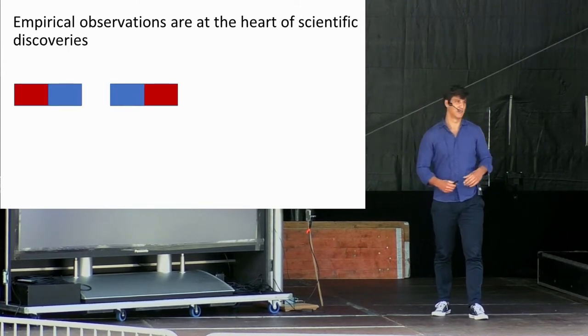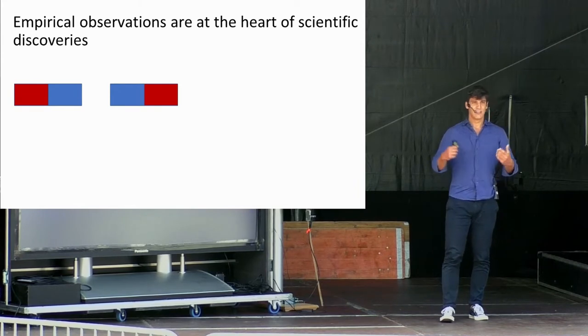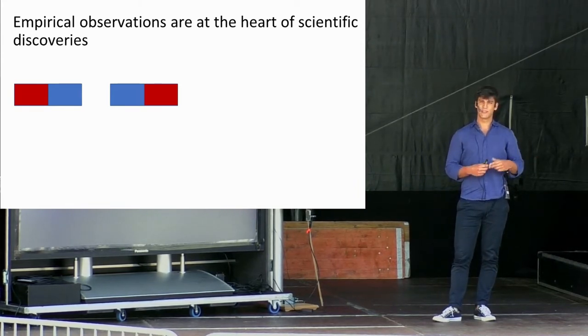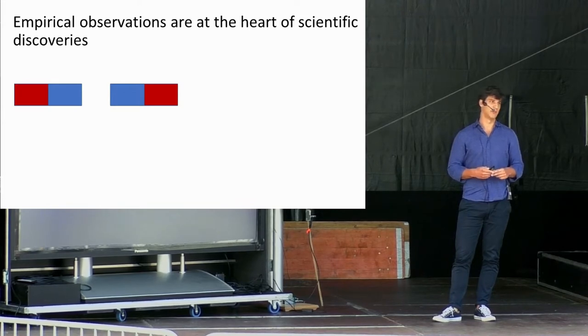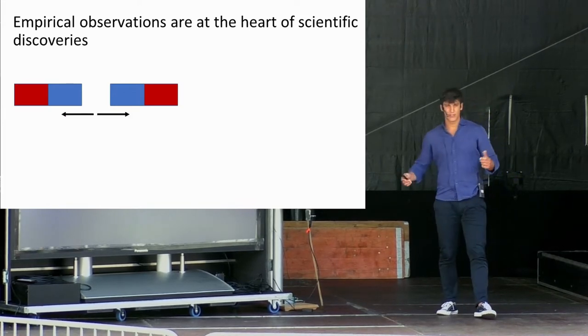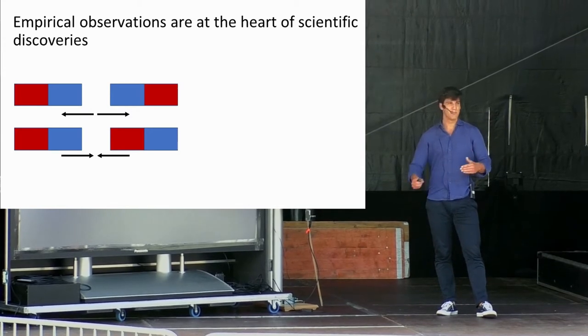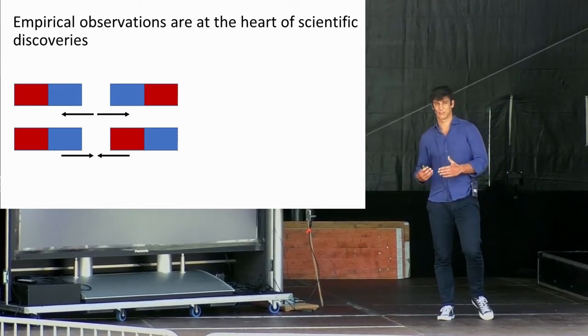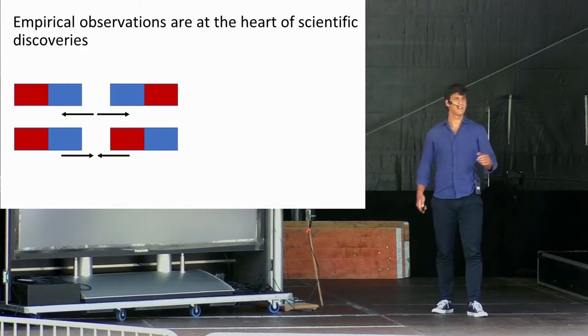But how do scientists get to a scientific theory? Let us imagine to have two magnets in our hands. Once we put them close together, we might observe two different phenomena. The magnets might repel each other or the magnets might attract each other. Imagine now to do so with more and more magnets and always to observe the same effect.